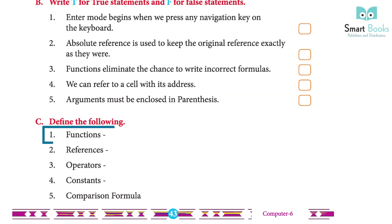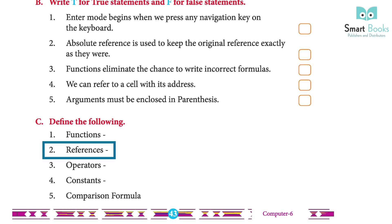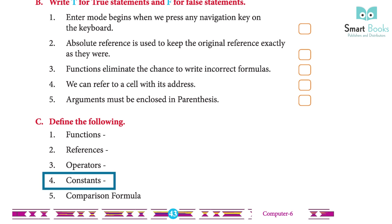Define the following: 1 — Functions: predefined formulas in Excel to perform simple and complex calculations; they eliminate the chance of writing incorrect formulas. 2 — References: a cell address that can be used in a formula to denote a specific cell. 3 — Operators: symbols that mention the operation to be performed. 4 — Constants: numbers or text values that do not change. 5 — Comparison formula: an expression that compares two or more numbers, text strings, cell content, or function output.